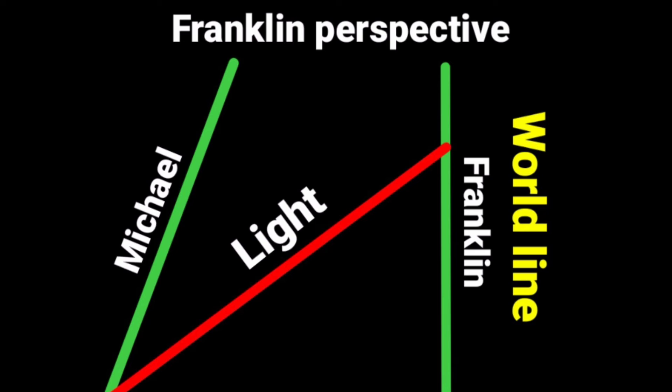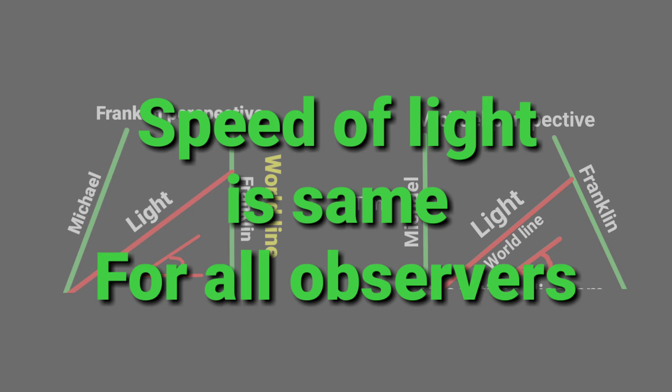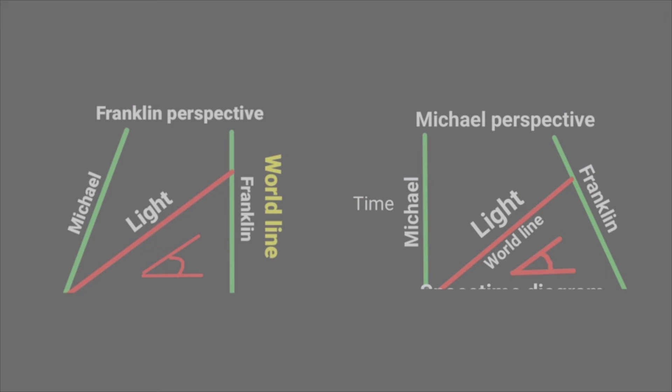Now you see that the light angle has not been changed. It is same in two perspectives. And then it is proved that the speed of light is same for all observers. This trick is known as Lorentz transformation.